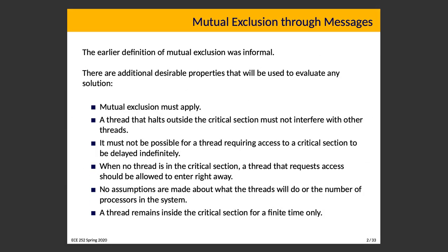I want to talk a little more about mutual exclusion in general. The previous definition was informal — these things don't happen at the same time, like only one person skiing down a hill. A more formal definition is that events C and D do not happen at the same time. There are desirable properties of any mutual exclusion solution relevant to evaluating whether it is any good. There are six.